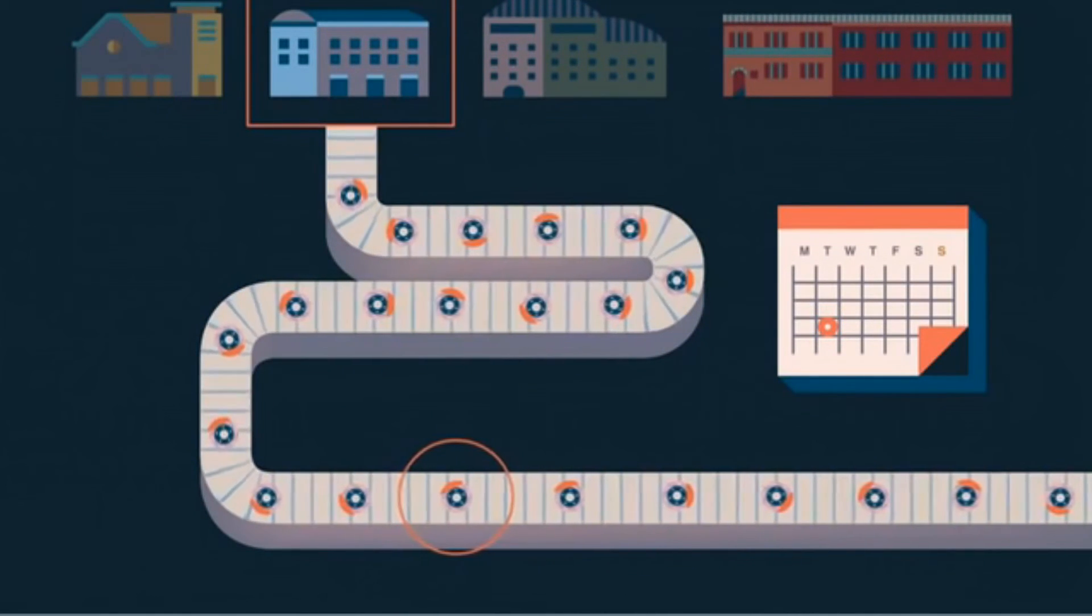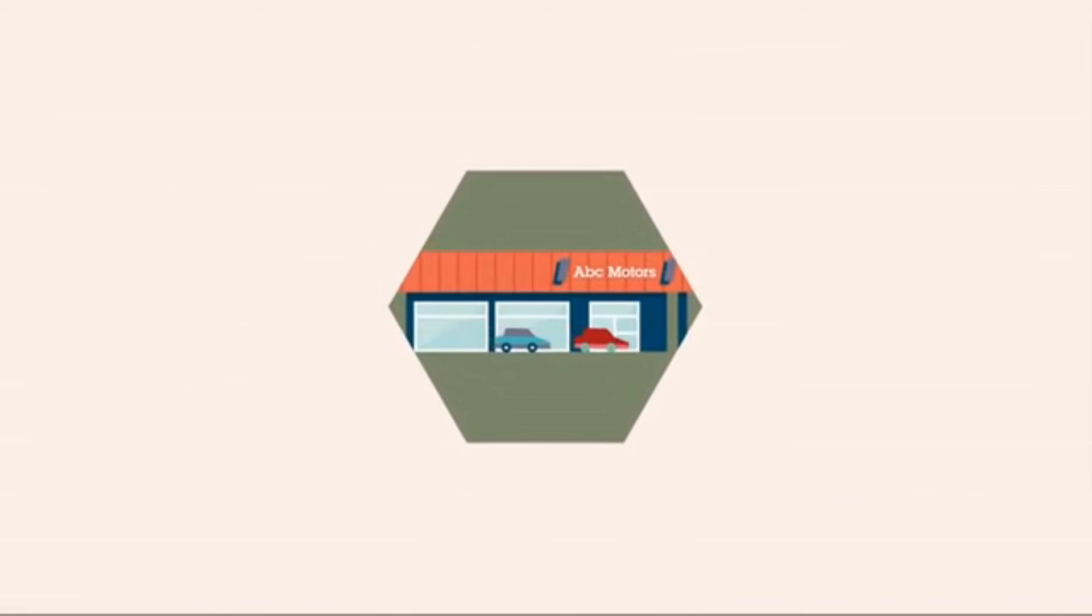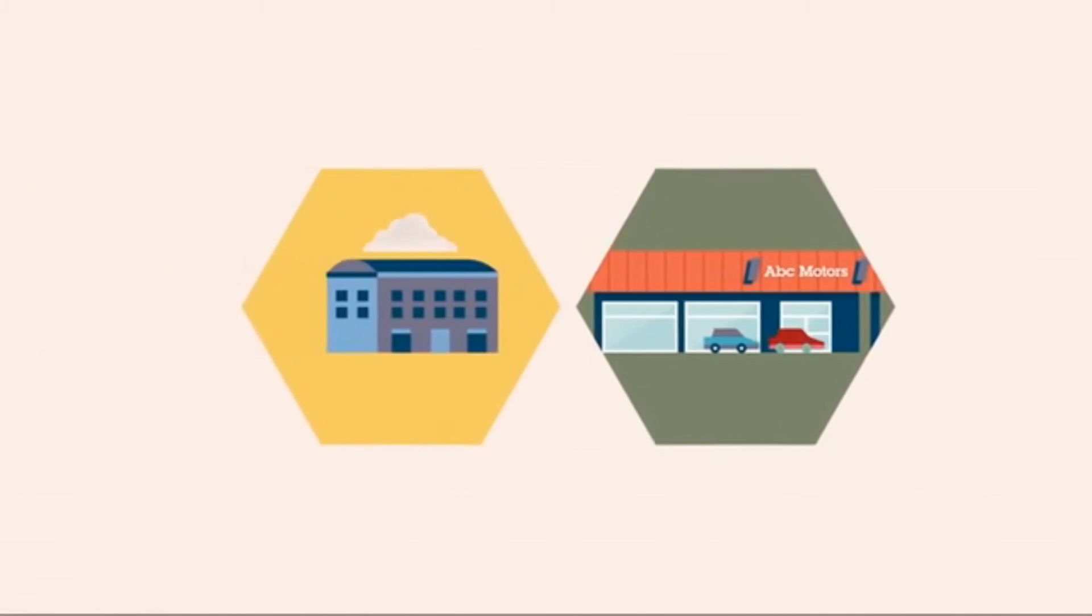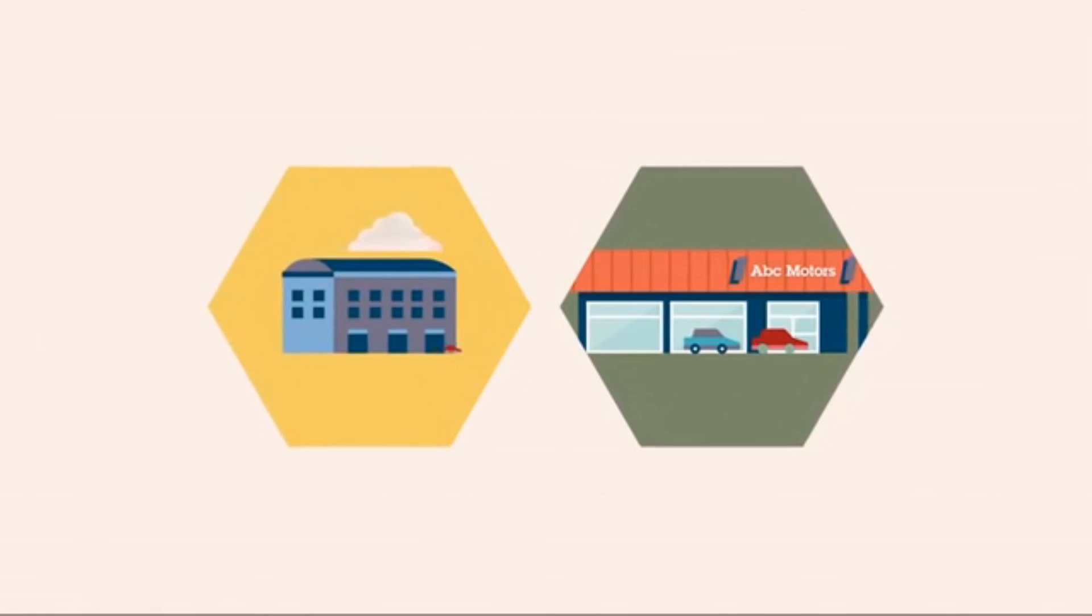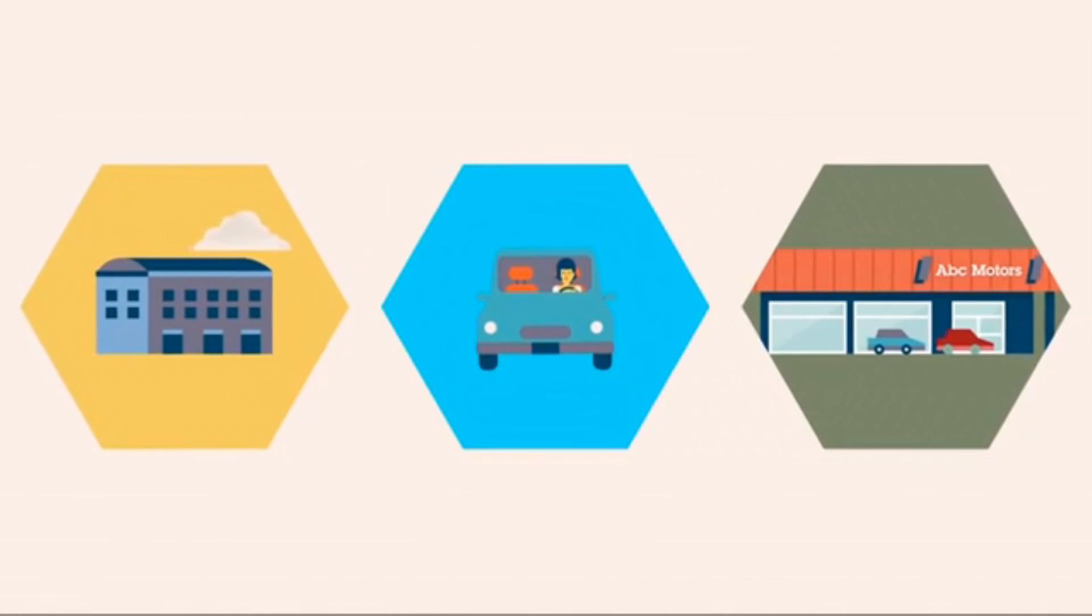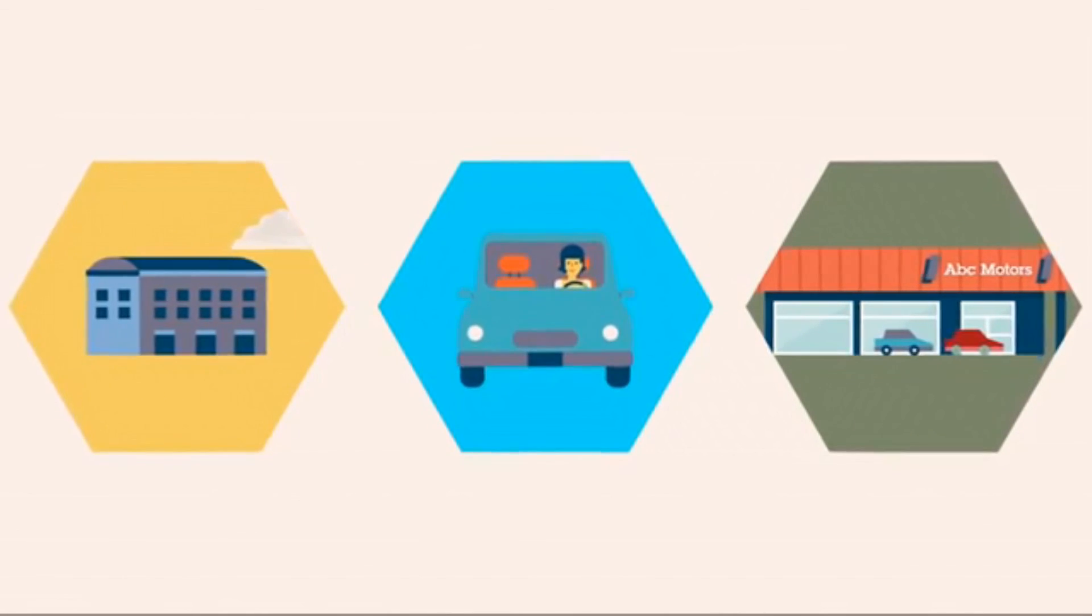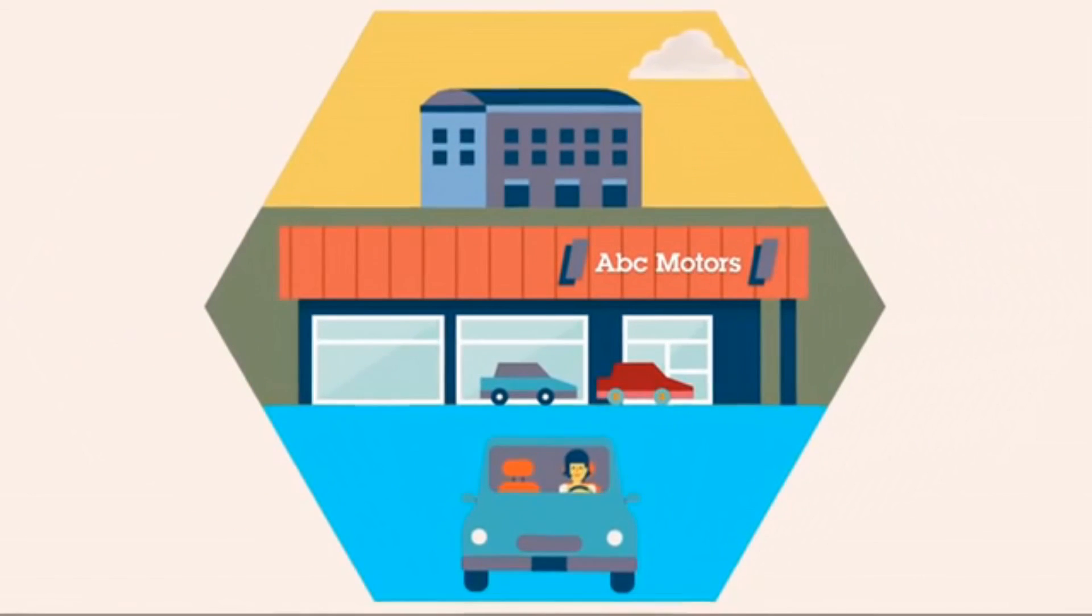So what do all these pieces add up to? Streamlined inventory management for the dealer. A better, safer car from the manufacturer. And for Rebecca, it means she can be back on the road faster and get to where she's going safely. All thanks to the Internet of Things.